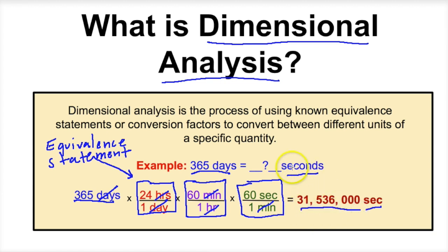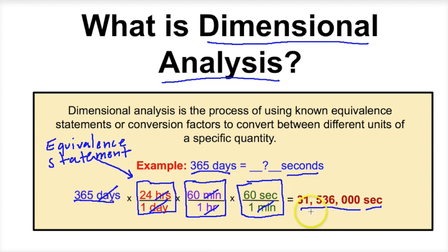So how many seconds are there in one year, or how many seconds are there in 365 days? We used dimensional analysis and a series of equivalent statements to solve this problem. 365 days, or one year, is equal to 31,536,000 seconds. That's dimensional analysis. Let's take a look at some equivalent statements next.